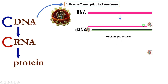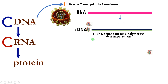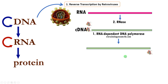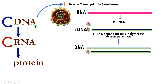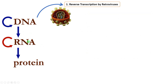The same enzyme then cleaves out the RNA from the RNA-DNA hybrid by its ribonuclease activity. This single-stranded DNA is then converted to double-stranded DNA by the same reverse transcriptase enzyme, using its DNA-dependent DNA polymerase activity. This is against central dogma — where normally DNA is converted to RNA, in retroviruses the RNA is converted to DNA.